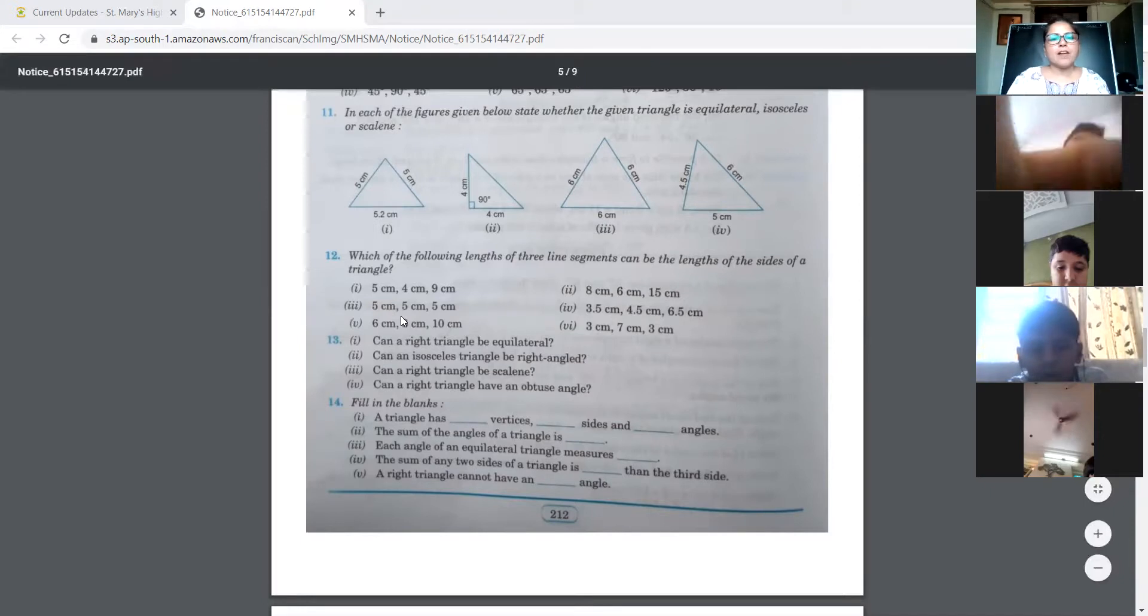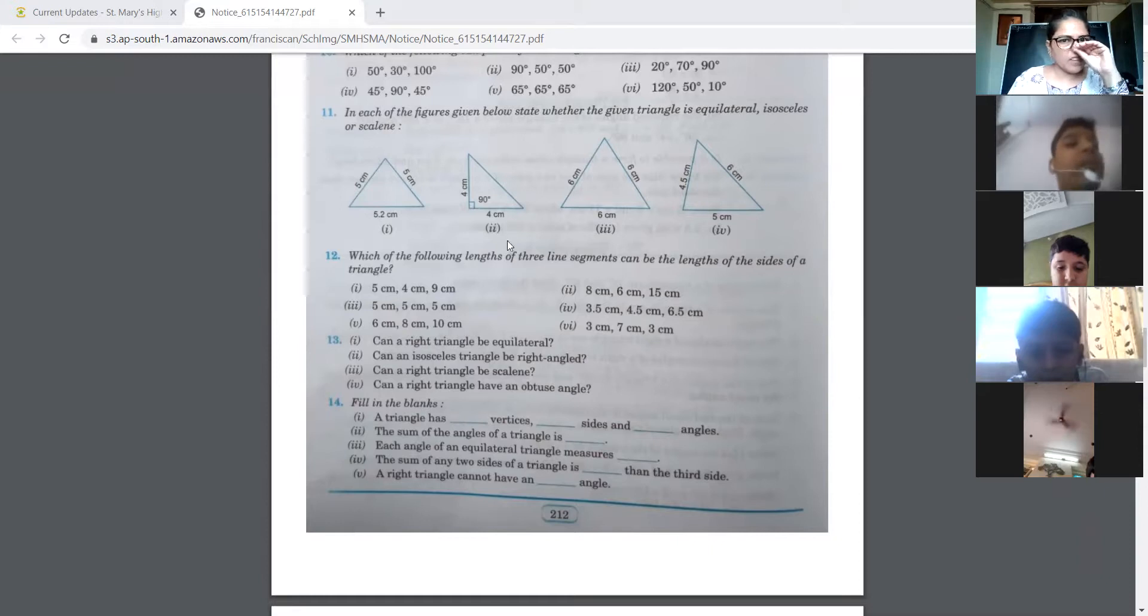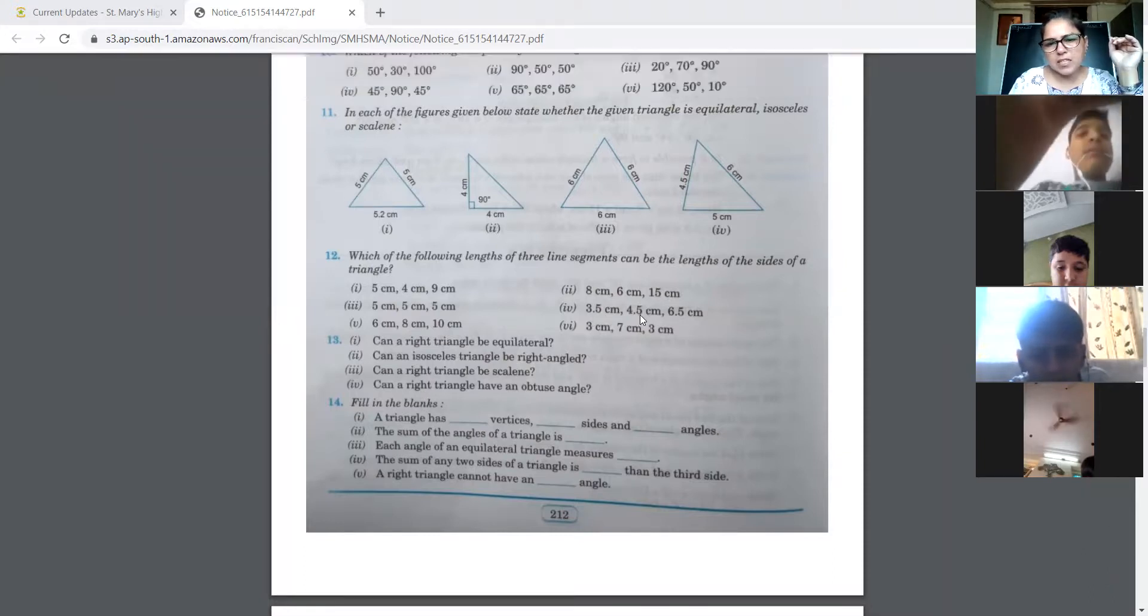Now you go to the third one. When you add 5 and 5 you get 10. Now 10 is greater than 5, so this is possible. Next we go to this one. Here you add the two smaller numbers. How much will it become? 8 centimeters. So 8 centimeters is greater than 6.5 centimeters.